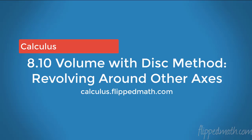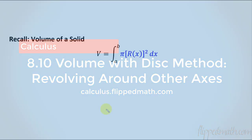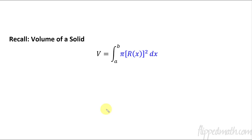Today we're going to take the same thing we did in our last lesson, which is looking at volumes of a solid by revolving it around an axis. But we're not going to do it on the x or y axis. This time we're just going to shift the thing vertically or horizontally — meaning up or down, or left or right — and then revolve it.